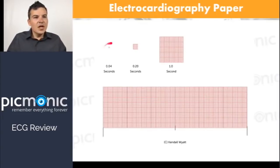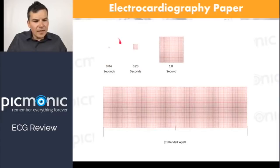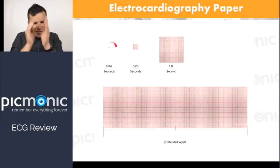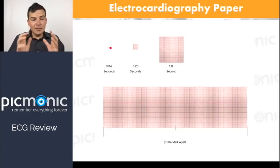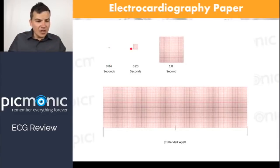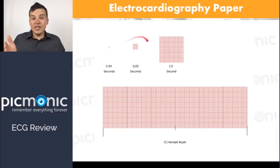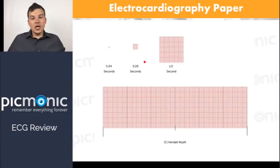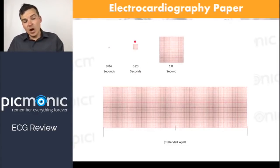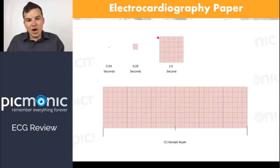Everything goes in multiples of five. Five of the smallest boxes going across equals 0.2 seconds — because 0.04 times five is 0.2 seconds, or one-fifth of a second. And if you have five sets of those five small boxes, that equals one second across — which is 25 of the smallest boxes at 0.04 seconds each.